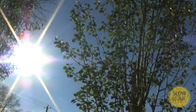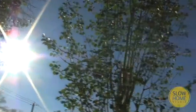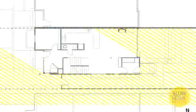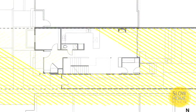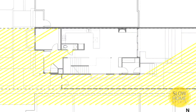A slow home is correctly oriented to the sun and properly relates to its surroundings. In the last episode, I showed you how the design of my house responds to the east-west orientation of our site. It lets sunlight into the house when it's wanted and keeps it out when it's not.